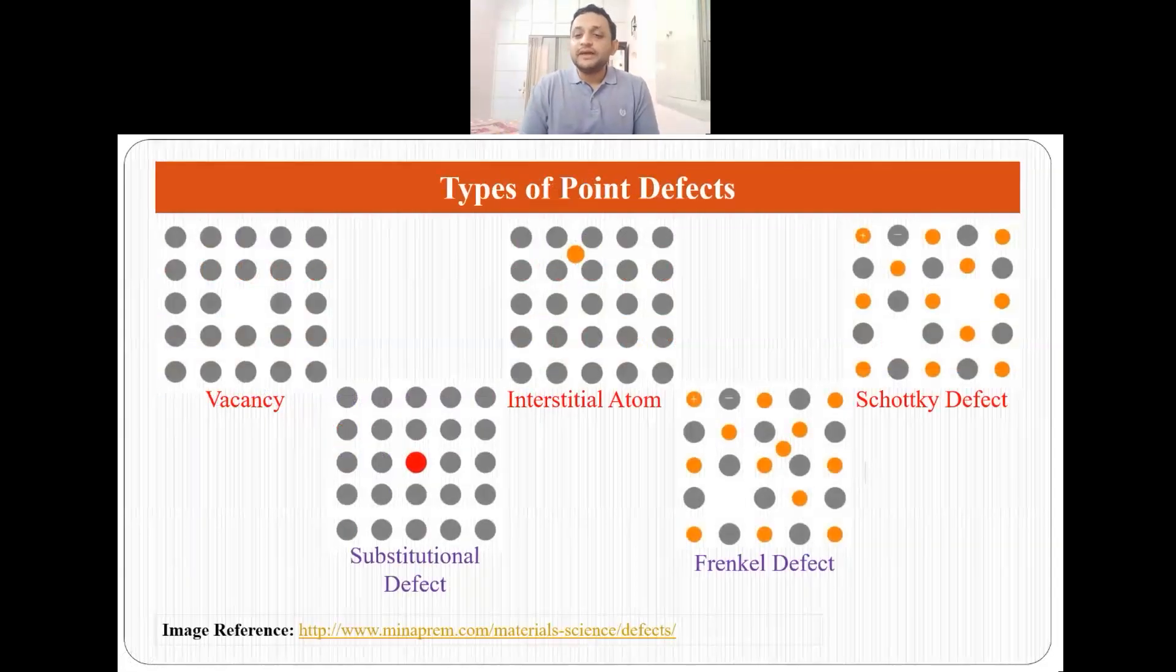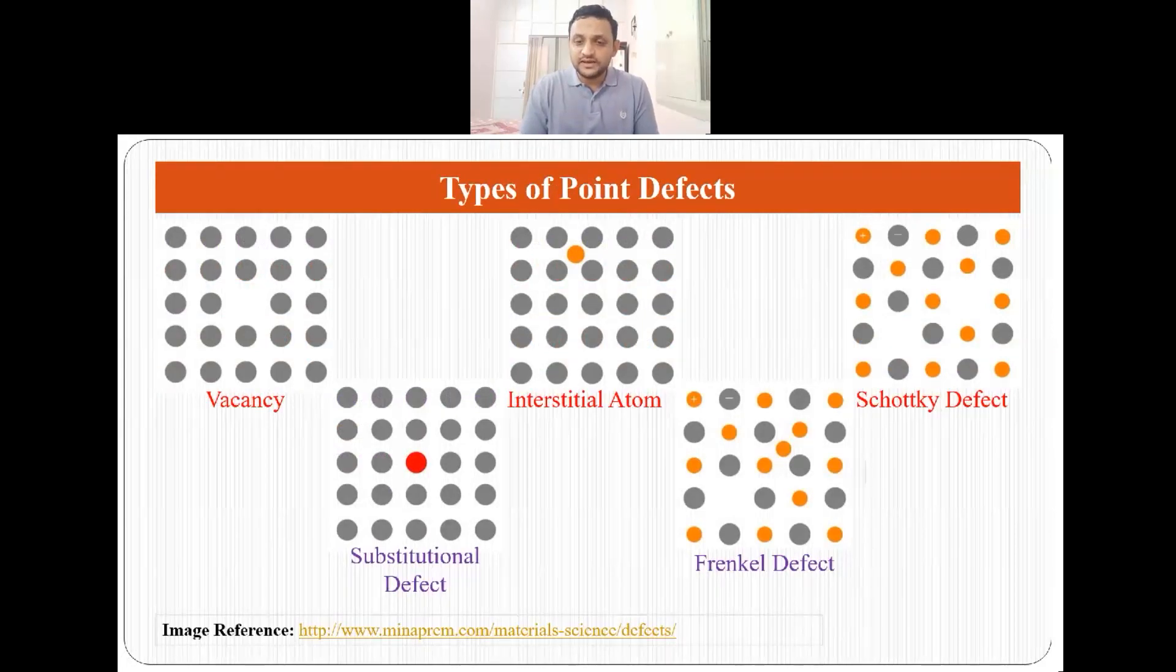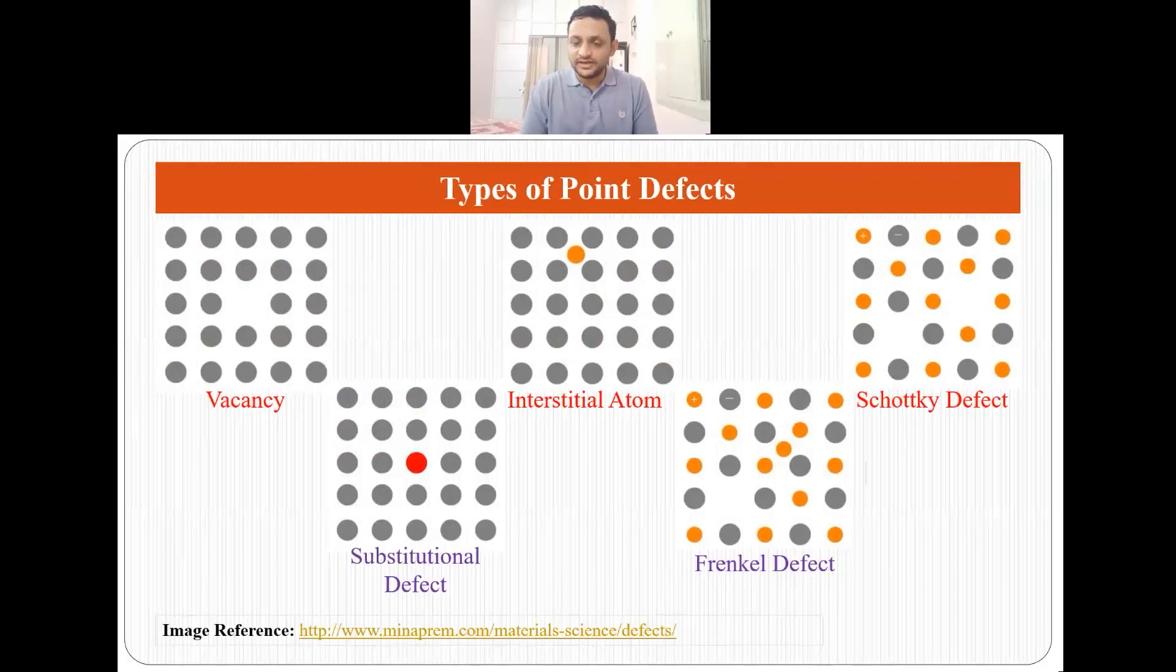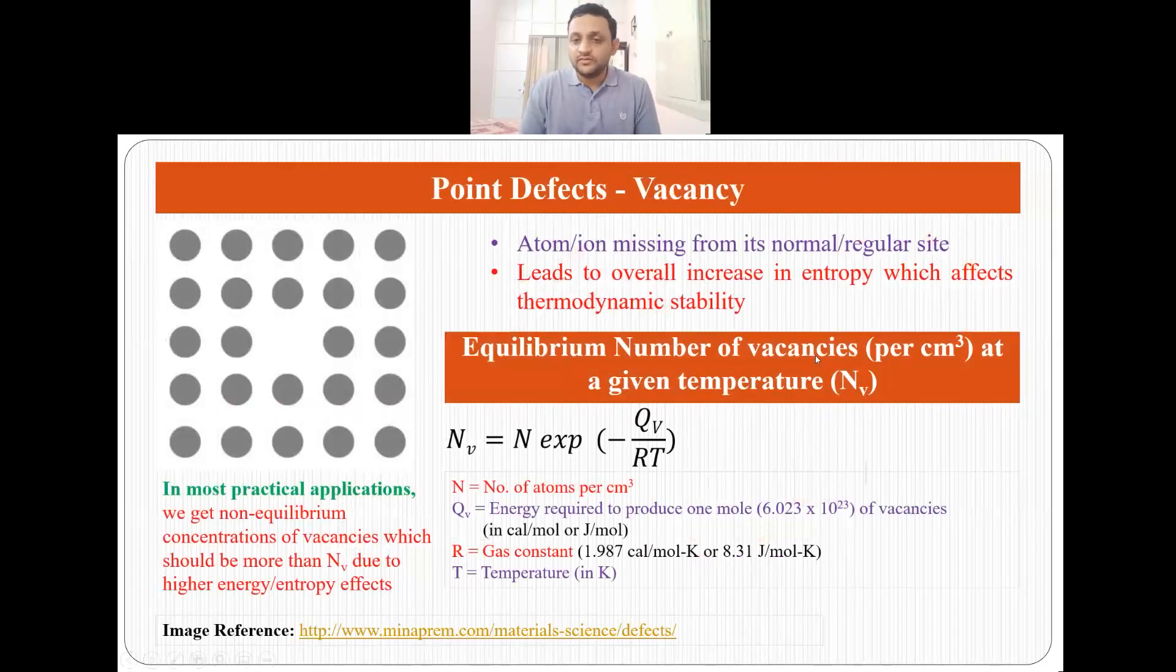There are five types of point defects: vacancy, substitutional defect, interstitial defect, Frenkel defect, and Schottky defect. In vacancy, an atom or ion present in a regular site goes missing, so there is an area where there is no occupancy of atom or ion, and this area is what we call vacancy. Since this area is created, the atom is missing, this will lead to an overall increase in entropy which affects thermodynamic stability.